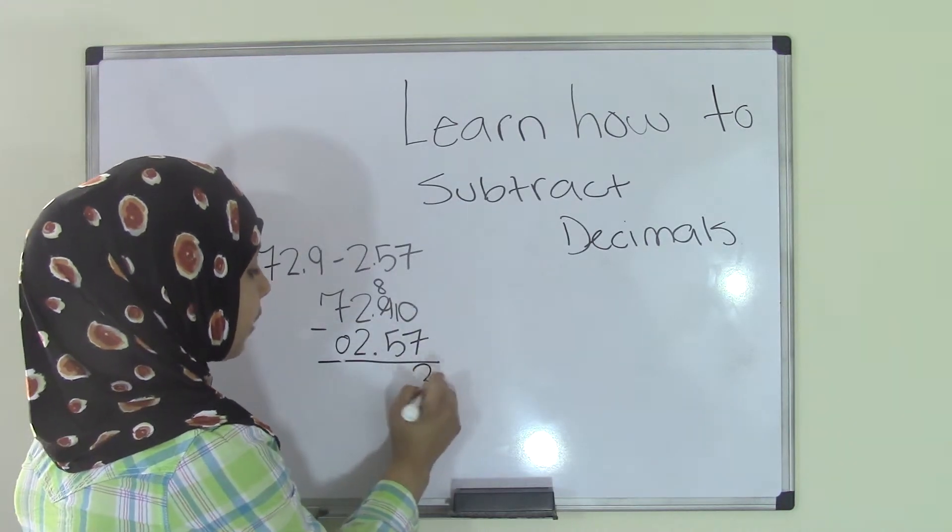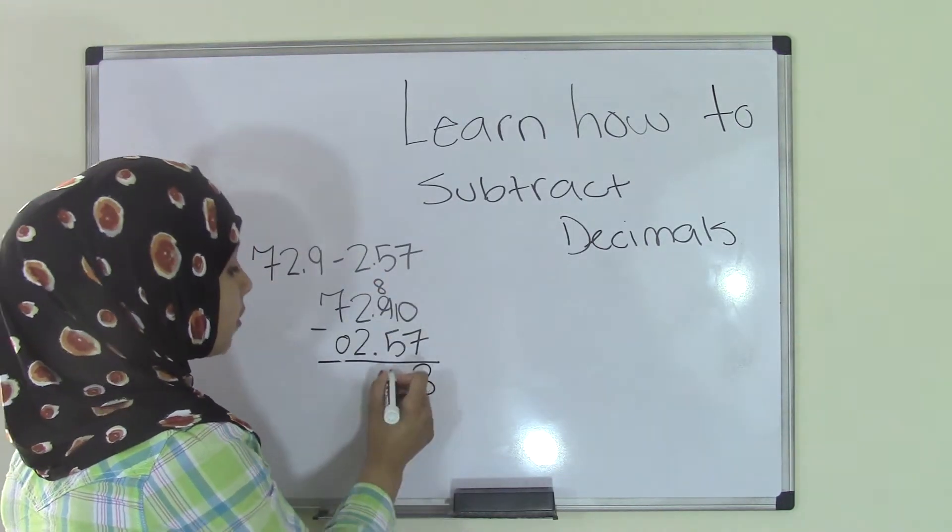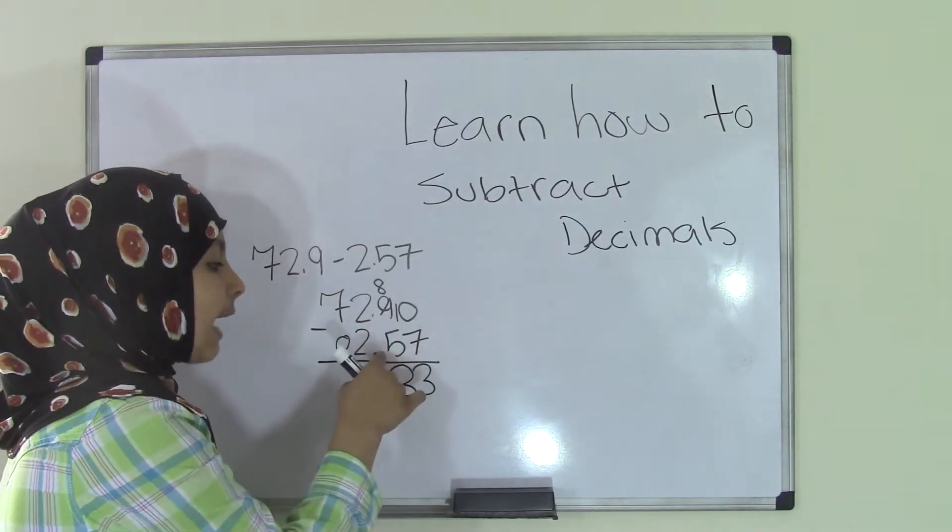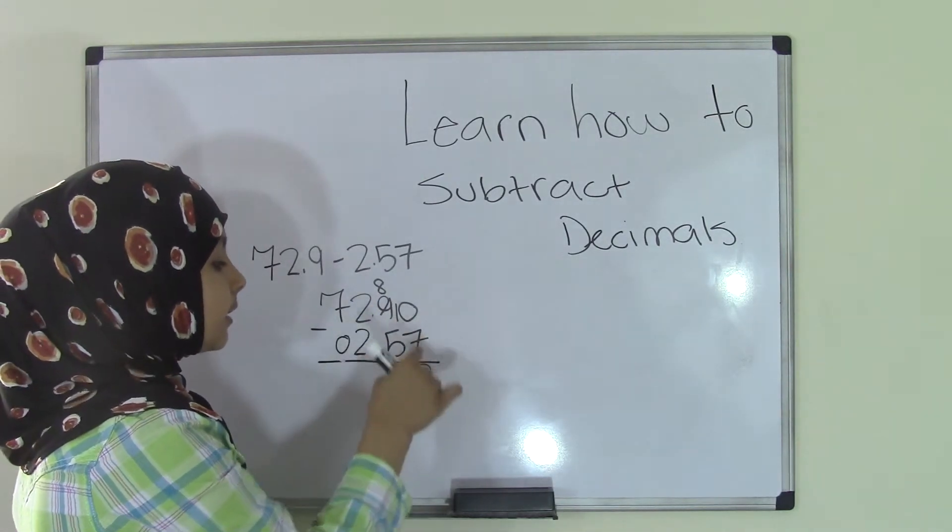So 10 minus 7 equals 3. 8 minus 5 also equals 3. Now you bring down the decimal point exactly because here are two digits and here are two digits.